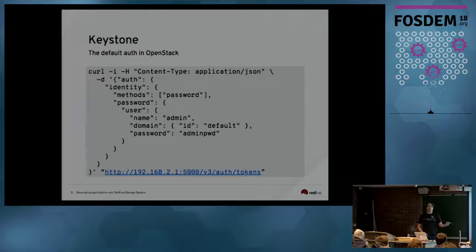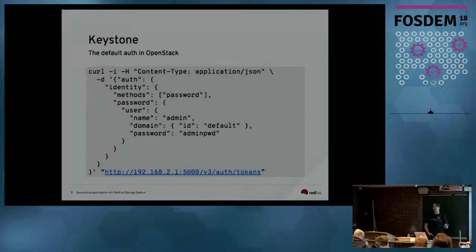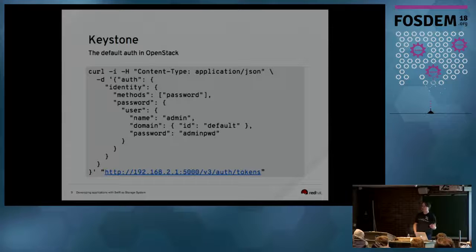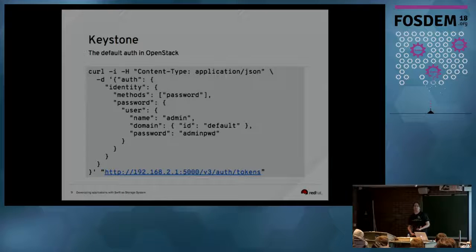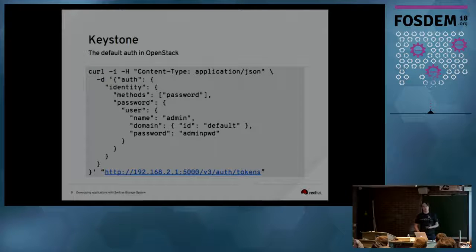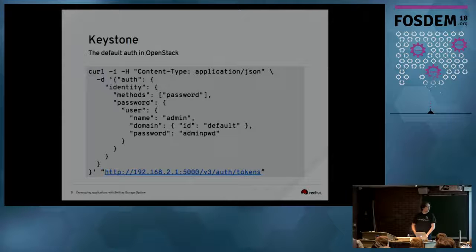You have a token that you send as a header to a URL. This is nice if you use it with a command line interface or curl. But if you want to upload data with your browser, your browser typically doesn't send custom headers along with a request. So we need a way to send authenticated data, for example, using a browser. There are two middlewares that work very similarly to each other for this purpose.